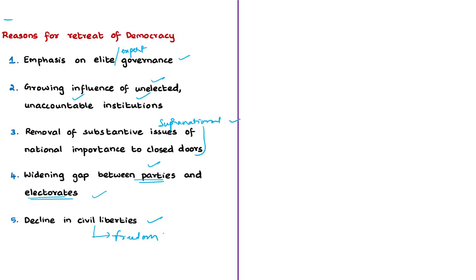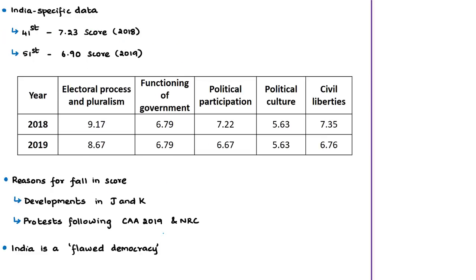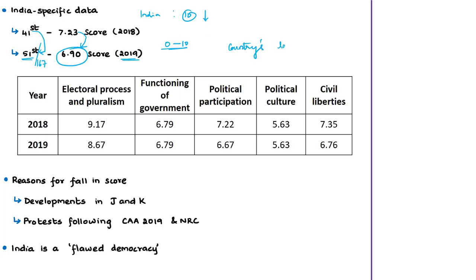India's score is about 6.90 and is ranked 51st out of 167 nations. This is worrisome as the world's biggest democracy has slipped 10 places within a year — India's rank fell from 41 in 2018 to 51 in 2019. India's overall score also fell from 7.23 to 6.90 on a scale of 0 to 10 within a year, and this score is the country's lowest since 2006.